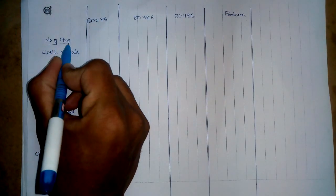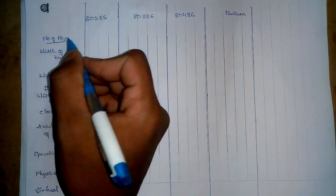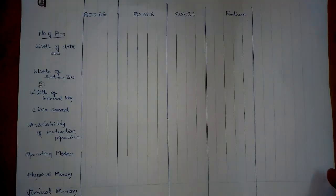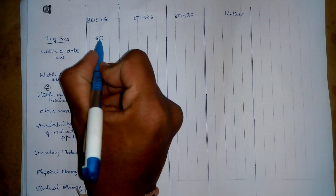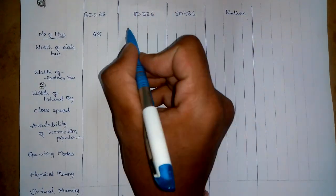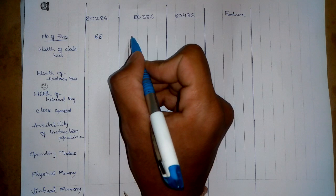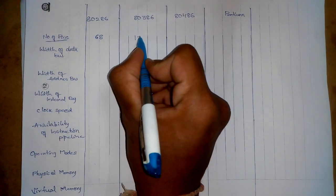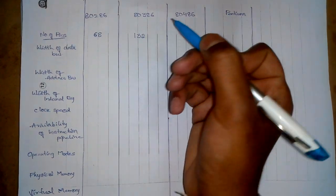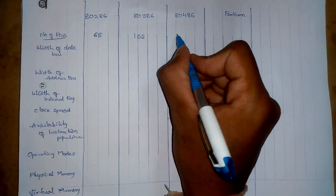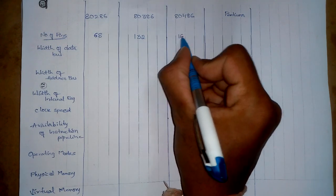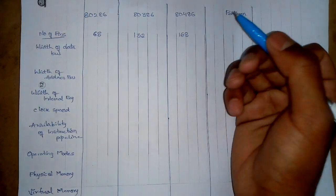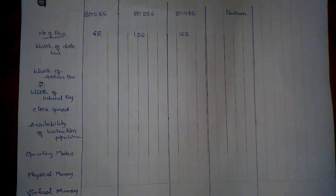First, when we consider the number of pins: the 80286 processor has 68 pins. The 80386 processor has 132 pins. The 80486 processor has 168 pins.